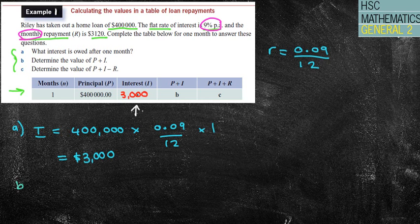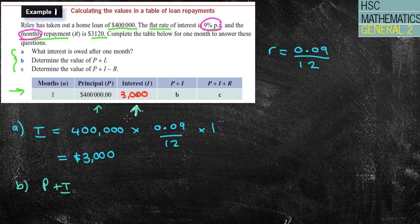The next two pieces are pretty straightforward. What does P plus I represent? When figuring out how much we owe at the end of the first month, we've borrowed $400,000 and we've been charged interest of $3,000 for borrowing that money. So adding those two amounts together tells us how much we owe, which is $403,000. We're simply adding P and I together.